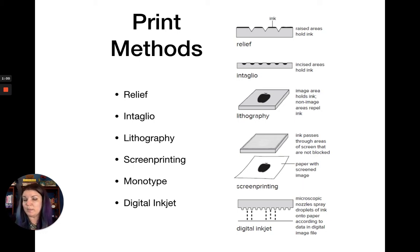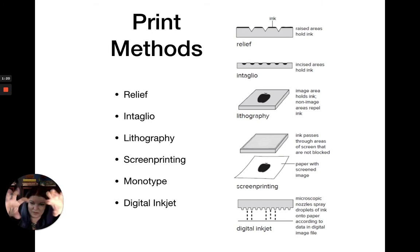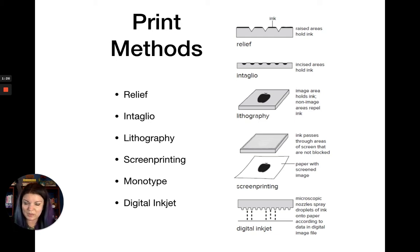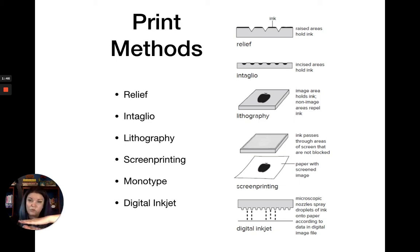When we talk about relief in printmaking, it's similar to relief in sculpture—think of it in terms of carving. As a kid, you might have done a crayon rubbing where you put paper against a textured surface and can see the imprint of that texture. That works because of the relief—how much the texture sticks up from the surface. In relief printing, ink goes on the raised areas of the surface.